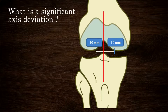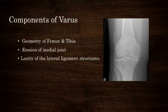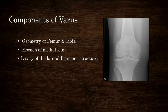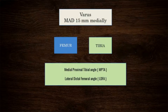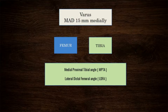In this video we will consider varus deformity primarily. Varus deformity could be produced by deformities in the tibia or femur, erosion of the medial joint, laxity of lateral ligament structures, and following malunited intra-articular fractures. The mechanical axis deviation indicates significant varus, but to understand the origin it is important to calculate two measurements: the medial proximal tibial angle (MPTA) and the lateral distal femoral angle (LDFA).